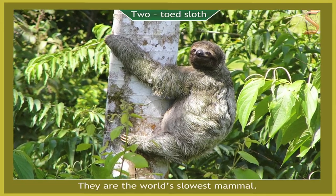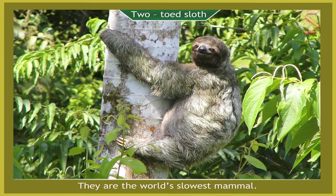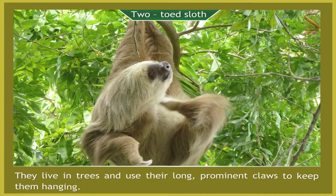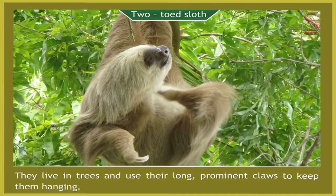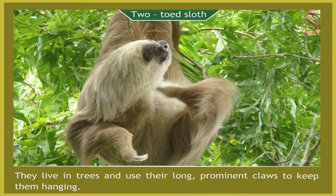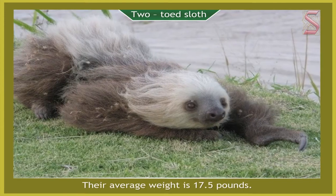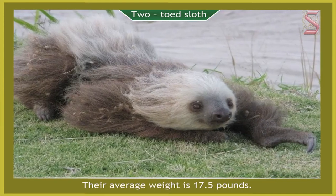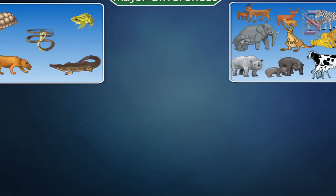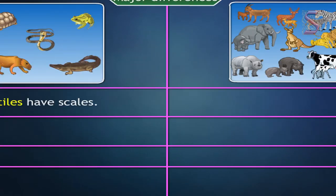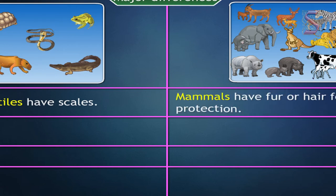Two-toed sloth: they are the world's slowest mammal. They live in trees and use their long, prominent claws to keep them hanging. Their average weight is 17.5 pounds. Major differences: reptiles have scales while mammals have fur or hair for protection.